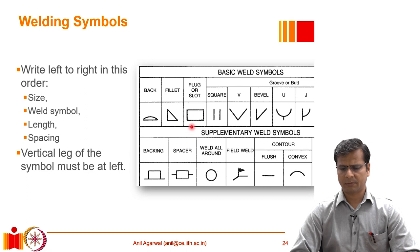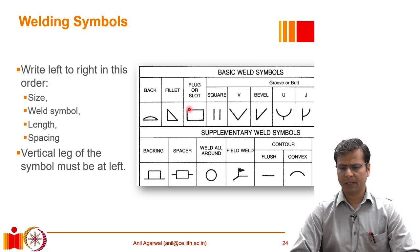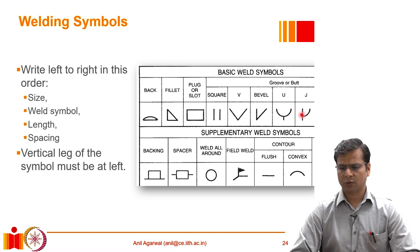Some of the important symbols are: a fillet weld is typically shown with a triangle. If it is a plug or slot weld, it is shown with a box sitting on that line. If it is a groove weld, depending on the type — whether it is a square groove, V groove, bevel groove, and so on — these symbols are shown accordingly.